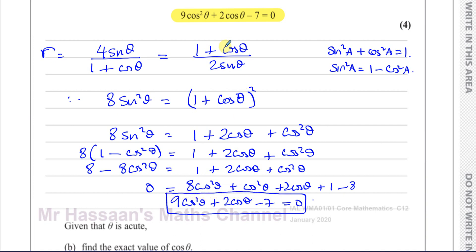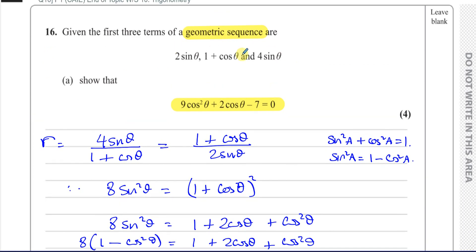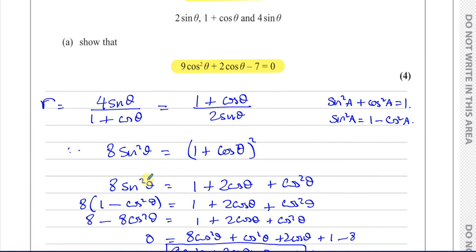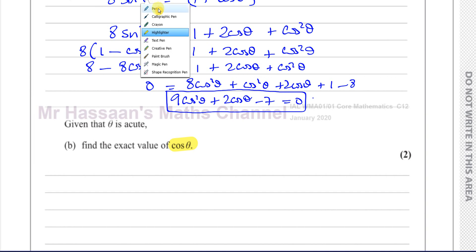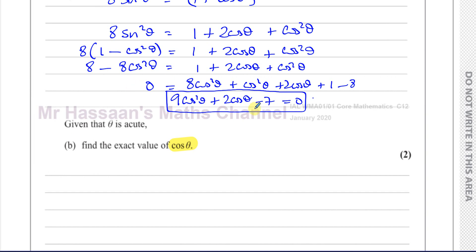By using the geometric sequence property — common ratio equals a term divided by the one before it — we formed the equation, changed sin²θ to cos²θ using the identity, and simplified. Now for part B: given θ is acute, find the exact value of cos θ. We start with 9 cos²θ + 2 cos θ − 7 = 0.